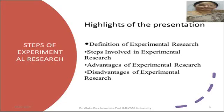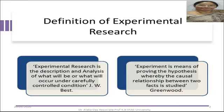Dear students, welcome to today's discussion on steps of experimental research as well as its advantages and disadvantages as a research approach. Let us proceed with this definition given by William Best. He defined that experimental research is the description and analysis of what will be or what will occur under carefully controlled condition. Experimentation is careful observation under controlled condition.